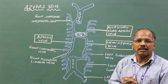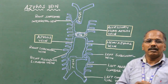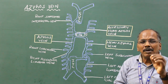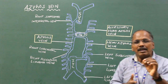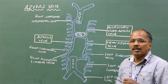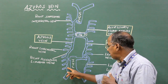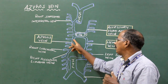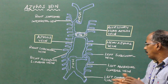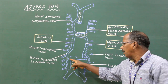Azygous vein. It is single and present on the right side, in the upper part of the posterior abdominal wall and posterior mediastinum. Formation of azygous vein: it is formed by the union of the right subcostal vein and right ascending lumbar vein. Sometimes the azygous vein arises from the posterior aspect of the inferior vena cava near the renal vein, and occasionally it may arise from the renal vein itself.